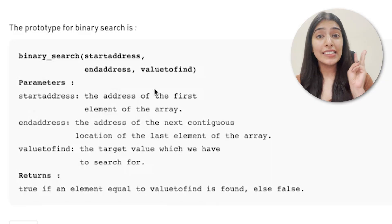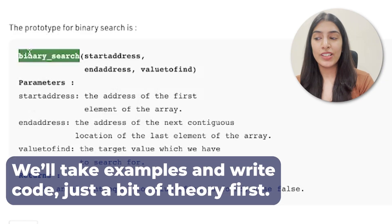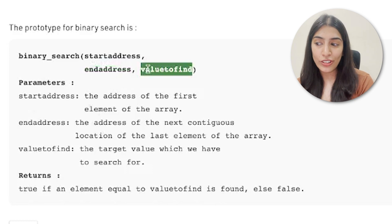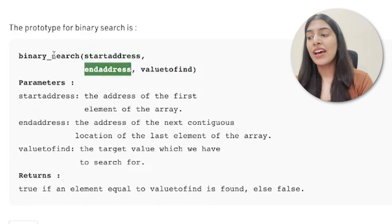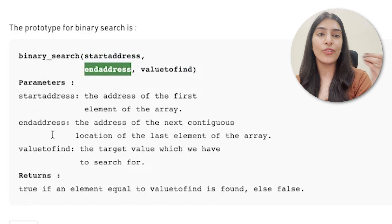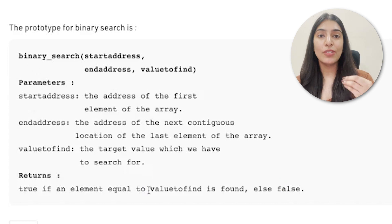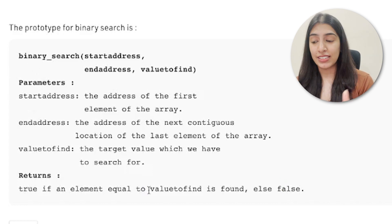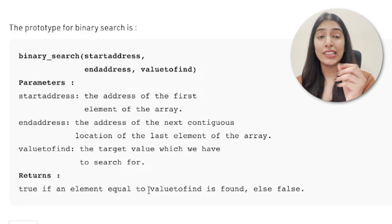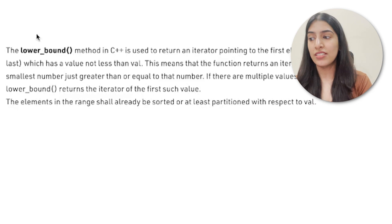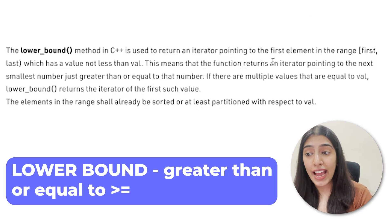So without wasting any time, let's get started. There are three STL functions you should know. The first one is simple binary search — you give a start address, an end address, and a value to find. You tell it to find this value between this starting point and this ending point, and it returns true or false whether the value exists or not. But in many instances you won't just need true or false — you'll need the exact index at which the value is present.